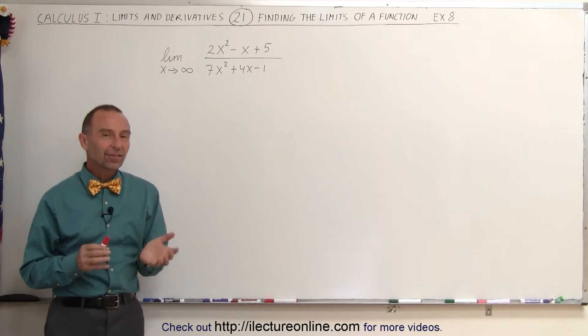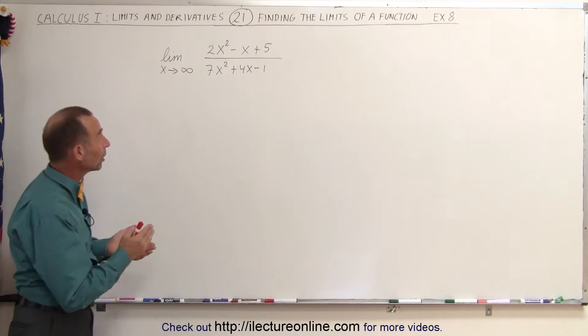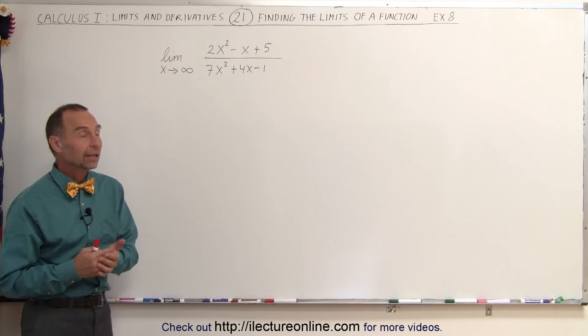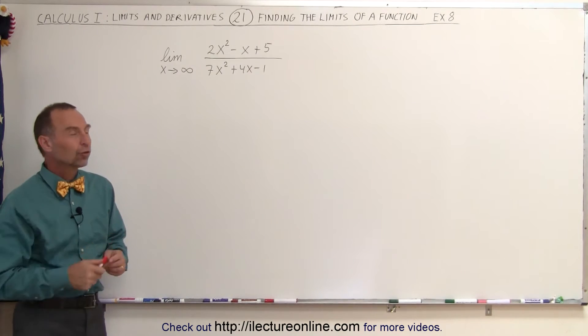Welcome to ElectronLine. In this example, we have two polynomials, one in the numerator, one in the denominator, and we're trying to evaluate the limit as x approaches infinity.